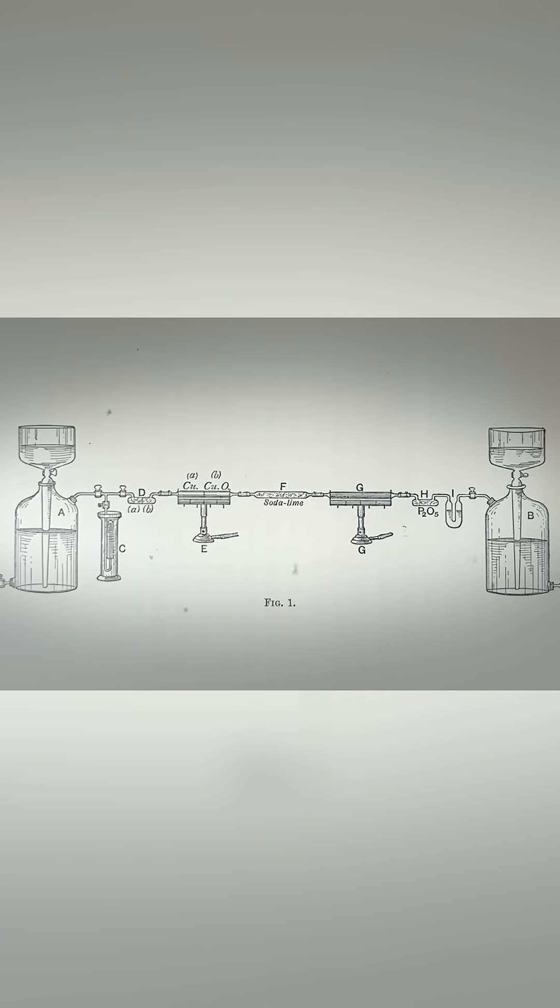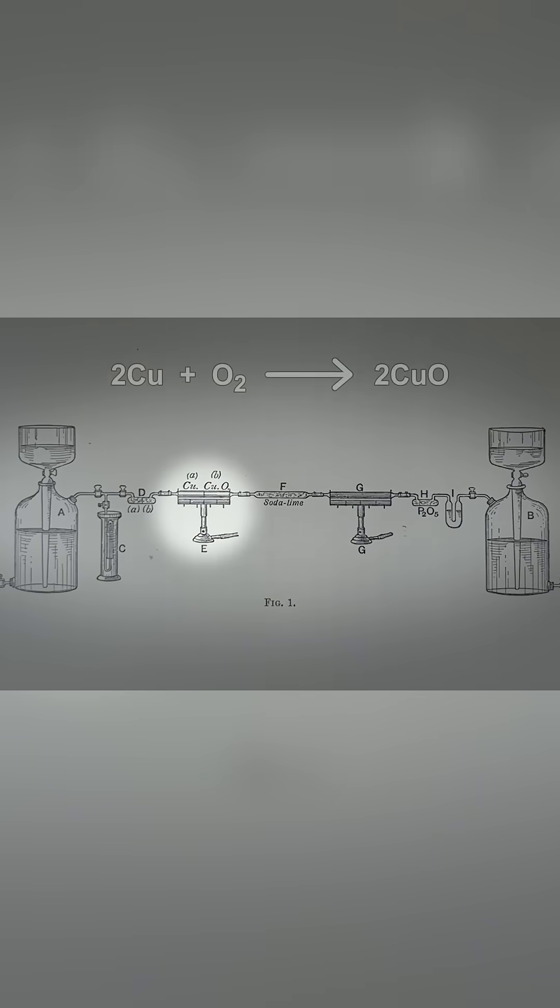The gas also passed through tube E which contained red hot copper to absorb any residual oxygen, and red hot copper oxide to oxidize any hydrocarbons or dust to carbon dioxide and water.